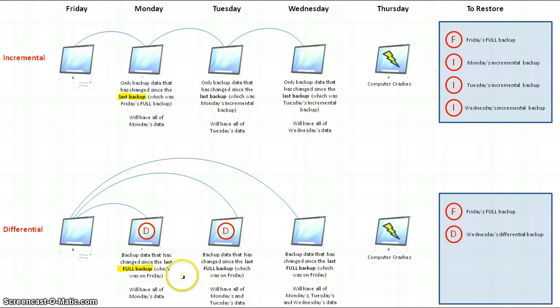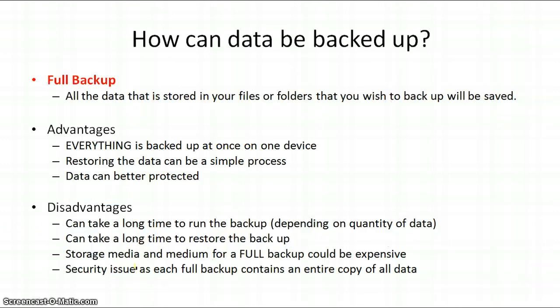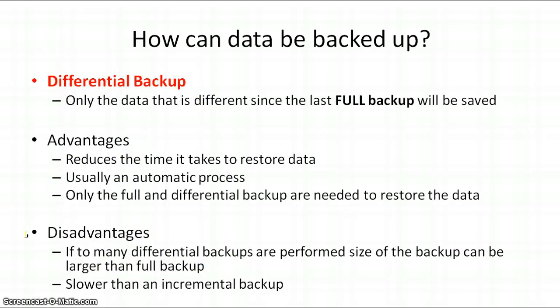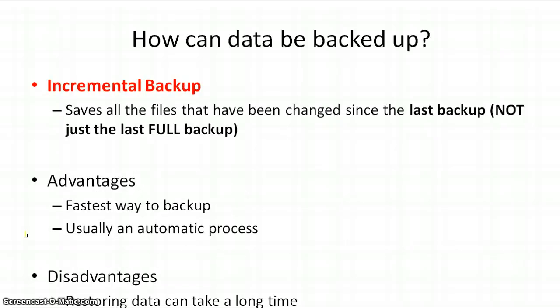To conclude, the very important difference between an incremental and a differential backup: an incremental backup only backs up data that has changed since the last backup, whereas a differential backup only backs up data that has changed since the last full backup. A full backup saves all data in the files and folders you wish to backup. A differential backup reduces the time it takes to restore data, but it is slower to perform than an incremental backup because you may have to backup several days' worth of data instead of just one.